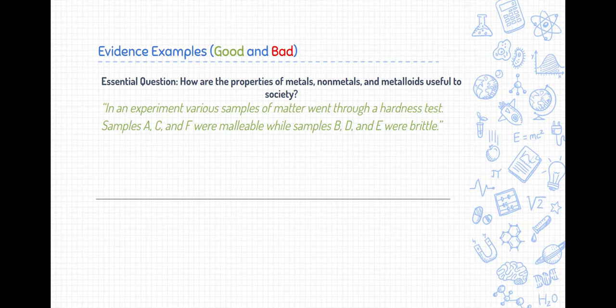In an experiment, various samples of matter went through the hardness test. Samples A, C, and F were malleable, while samples B, D, and E were brittle. Notice I'm just listing data. I'm listing evidence, observations that we collected. Not really explaining anything quite yet, but this does relate to the essential question, and we'll explain how in the next section.